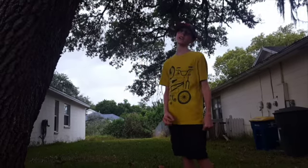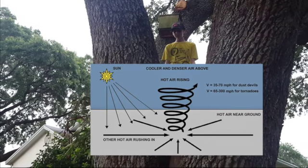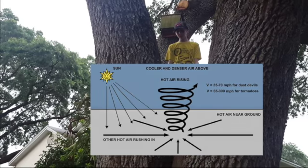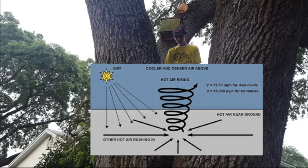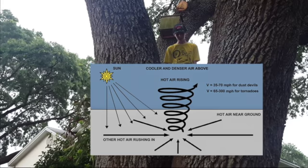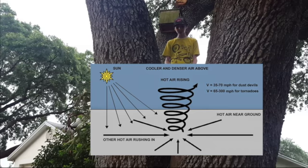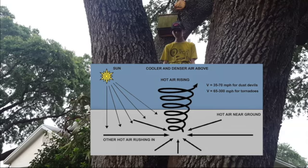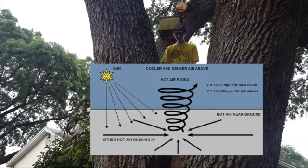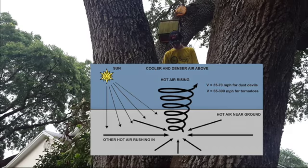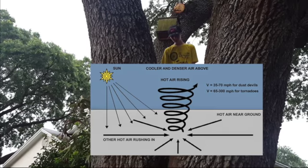Now I will discuss how dust devils form. Dust devils form when hot air near the surface rises quickly through a small pocket of low pressure air that's above it. Air may begin to rotate only when the conditions are just right. While the air rises at a rapid pace, the hot air is stretched vertically. This causes the spinning effect to intensify by conservation of angular momentum.